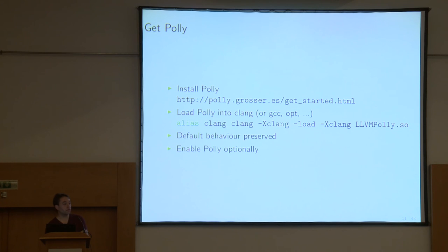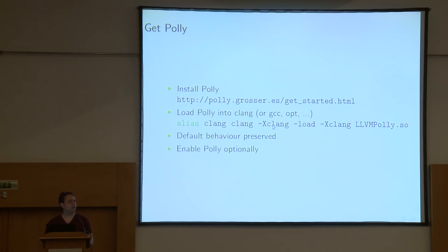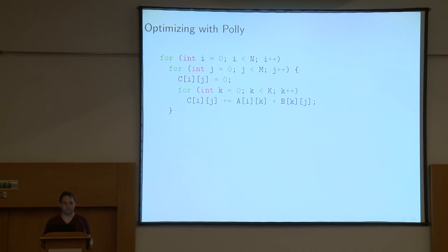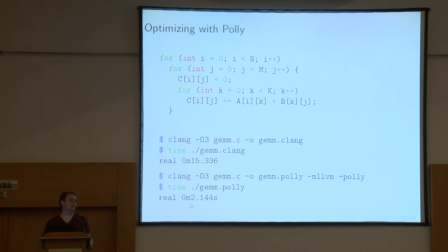To get Polly, you just go to the Polly website, go to get started, download and install it - you check it out into tools/polly and compile as normal. Then you can load it into Clang. It doesn't change the behavior of Clang; it just adds a couple of new compiler flags you can use to explore Polly. As a simple example, if you run LLVM on a matrix multiply it's a little slower, and if you run it with Polly you add another flag and it becomes a lot faster, because LLVM doesn't perform loop tiling and doesn't get the benefit of improved cache usage.